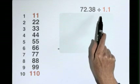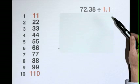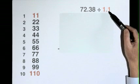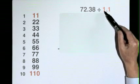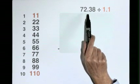72.38 divided by 1.1. It is best to divide by a whole number, so why not multiply the 1.1 by 10, which makes this 11, but you also then have to multiply this number by 10.